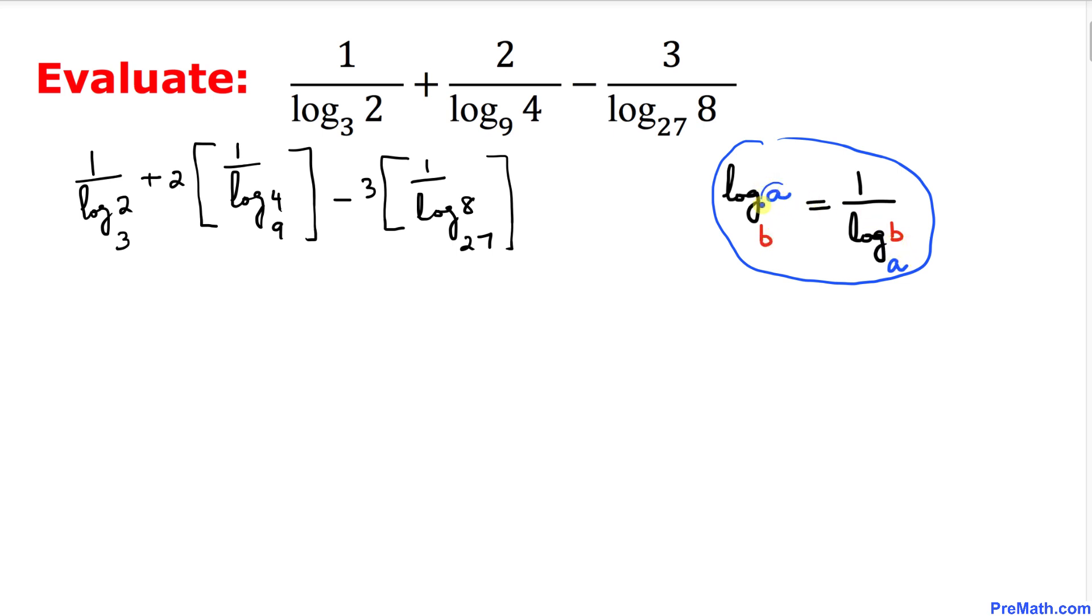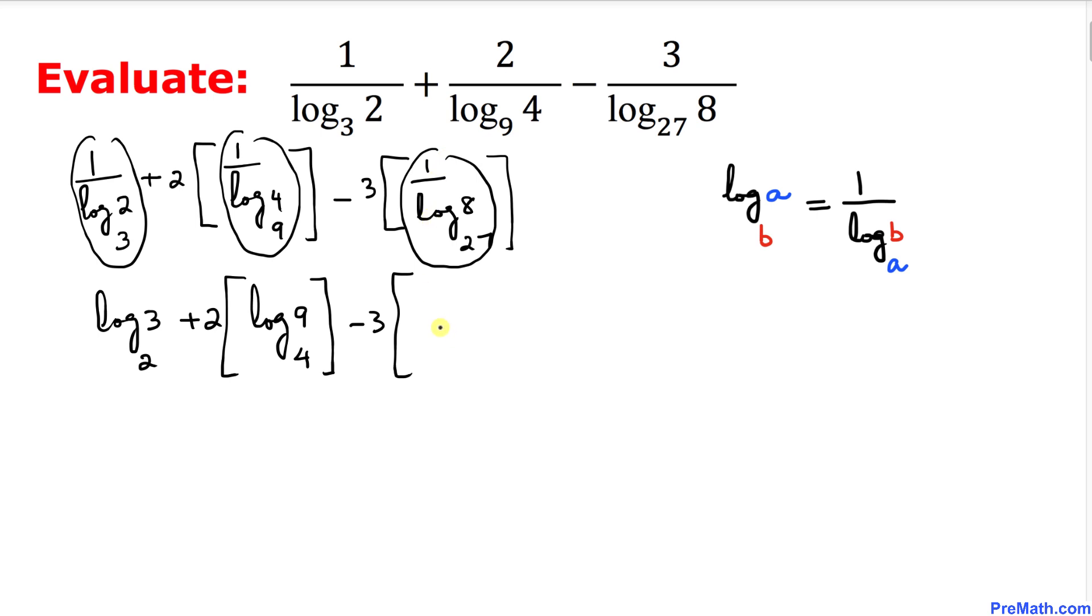So this argument over here a becomes the base over here. So this first fraction could be written as log of 3 with a base 2. We just switched these numbers plus 2 times, once again let's focus on this thing, this could be written as log of 9 with a base 4. We applied the same rule and minus 3 times, this would be written as log of 27 with a base 8.